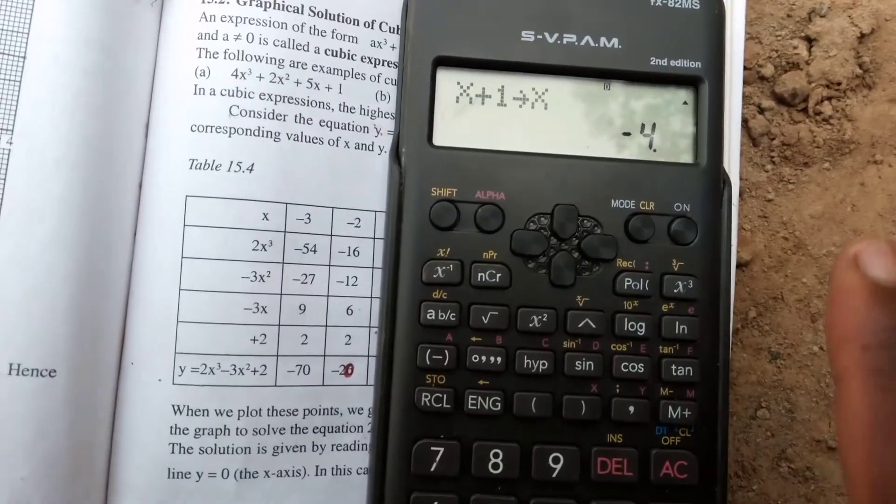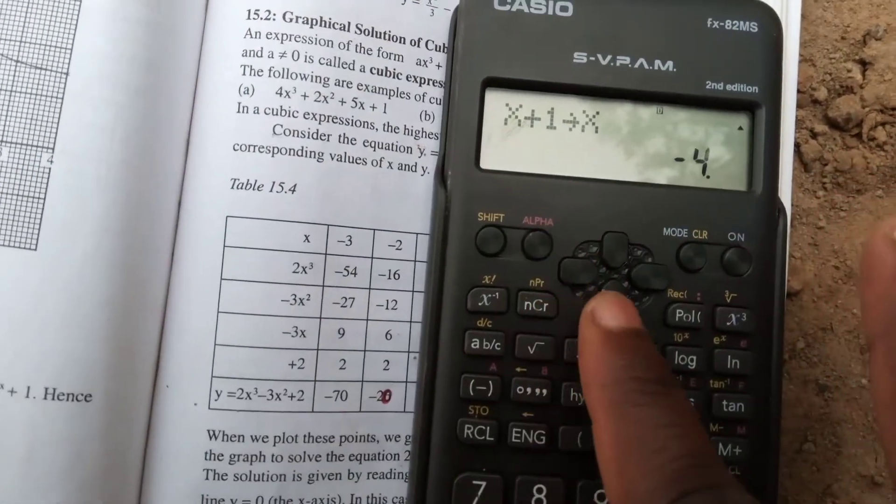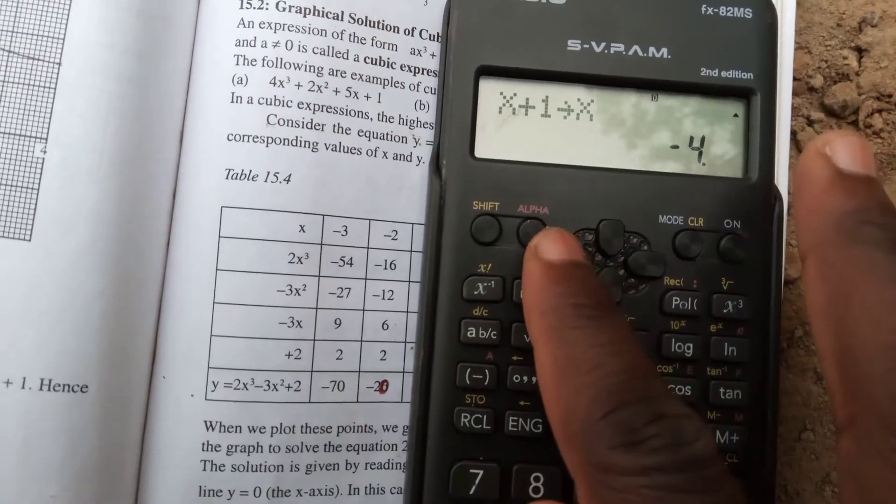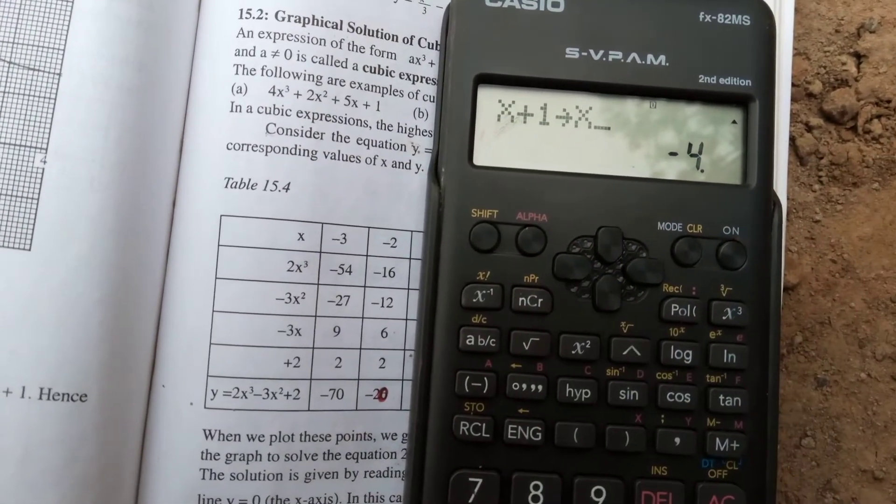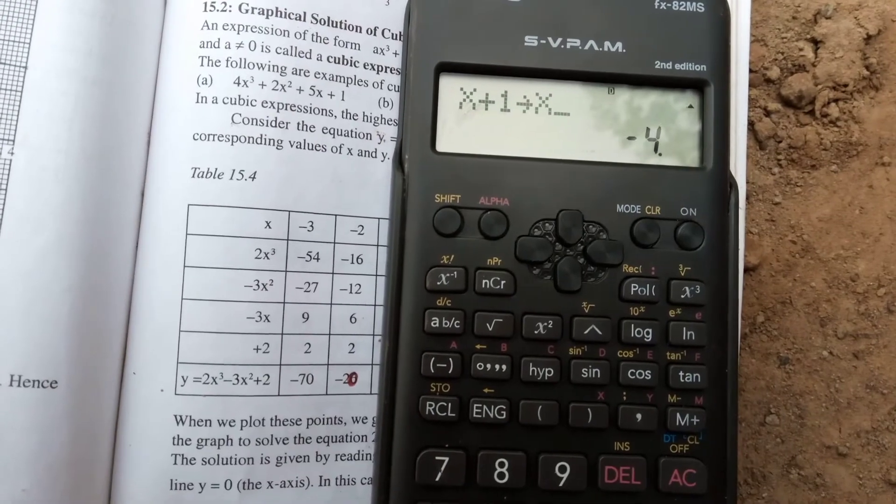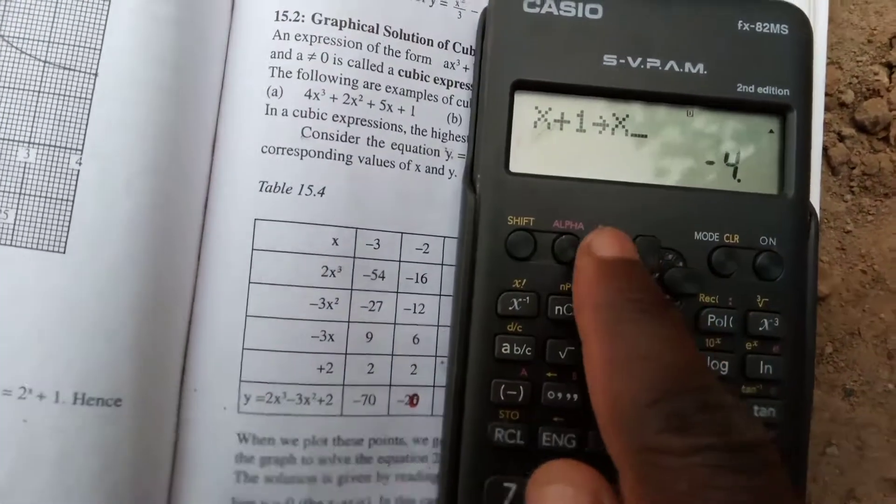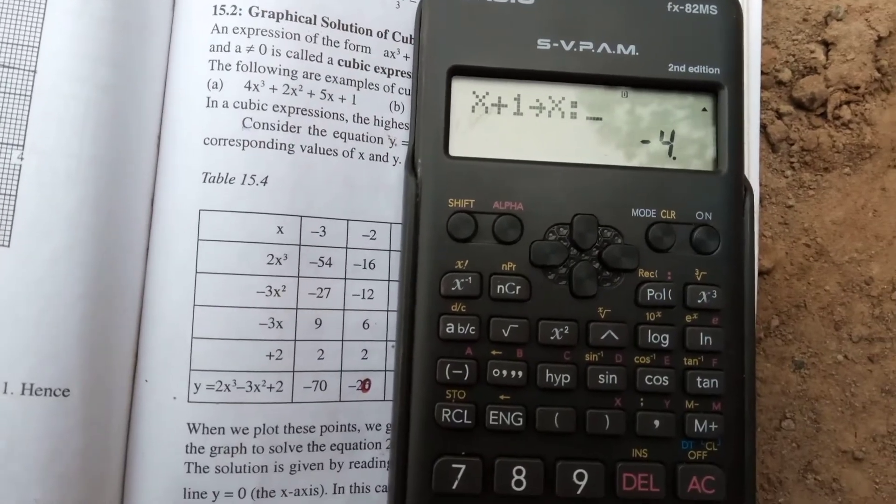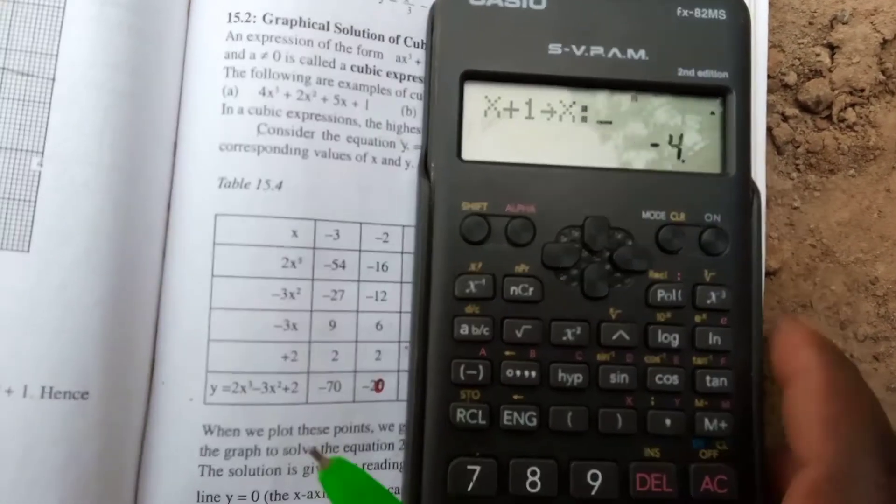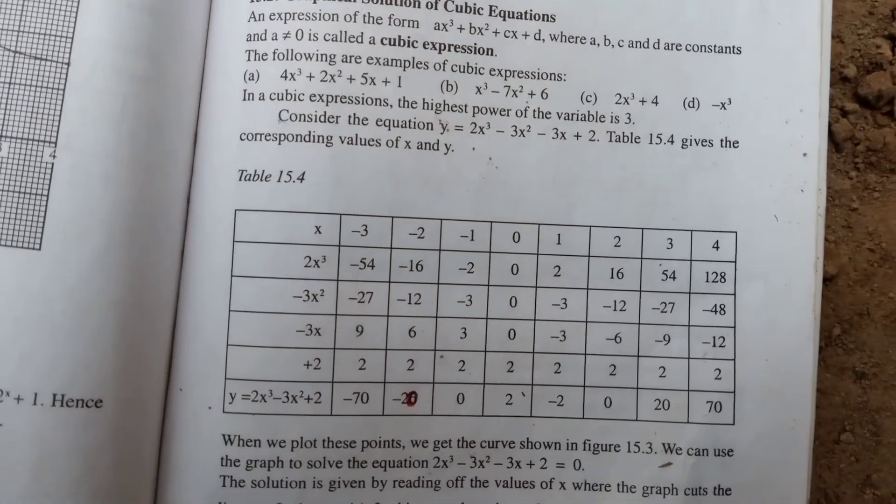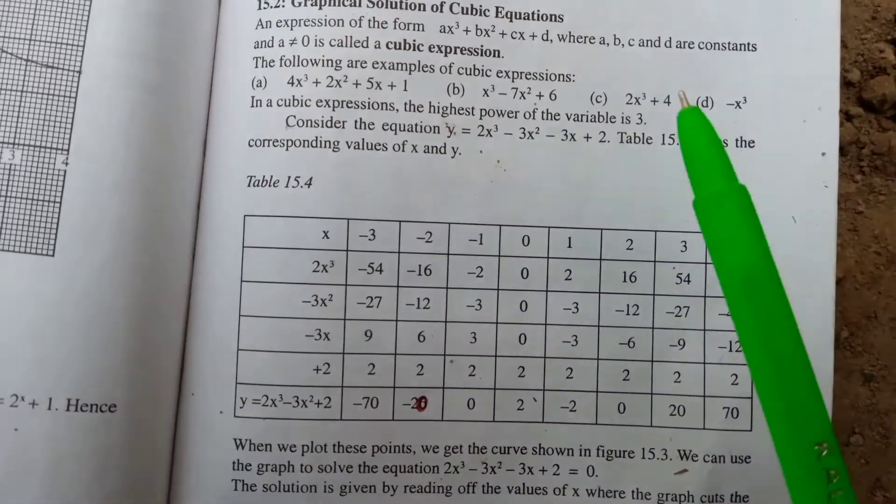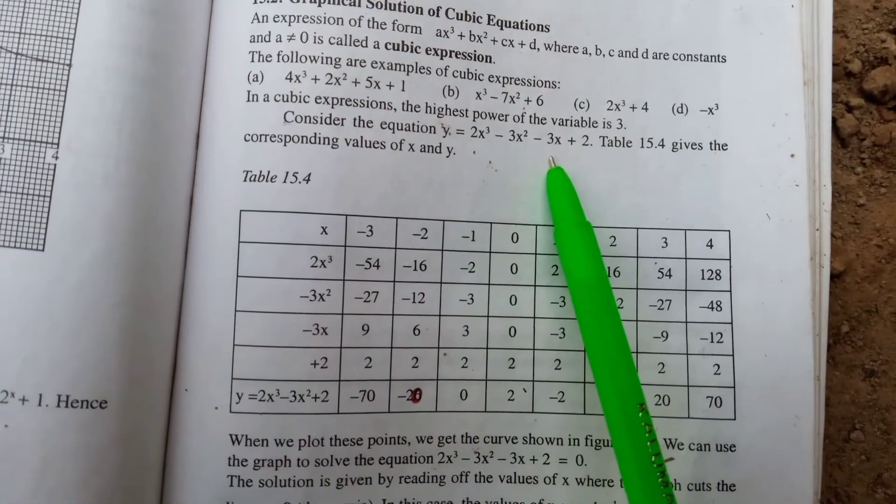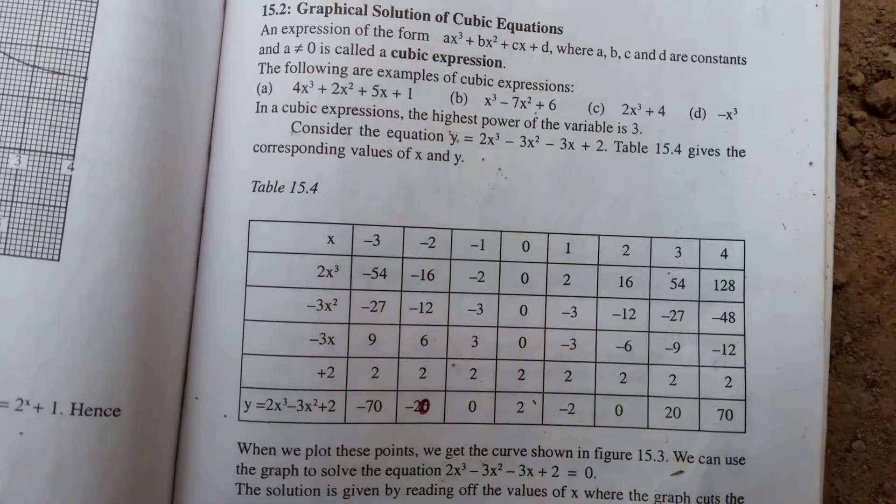Next step, go to the replay, the four buttons. Press the left one so that you get the cursor blinking. As the cursor blinks, press alpha then colon. You'll get the colon marks. After getting the colon marks, you insert your equation: 2x cubed minus 3x squared minus 3x plus 2.